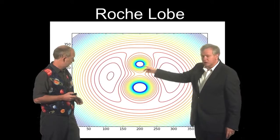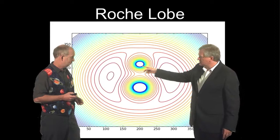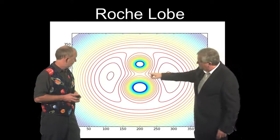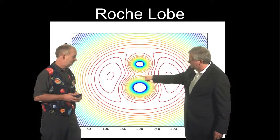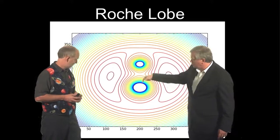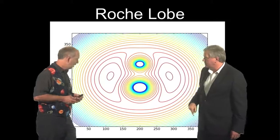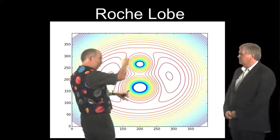So imagine that as this star starts using up its fuel and it gets bigger and bigger. Well, if it's just within its own little well, nothing happens. But what happens when it leaks out through here? It gets bigger than that. Then it's going to want to fall down there. And it's not going to fall straight. Because remember, this whole thing is rotating around.